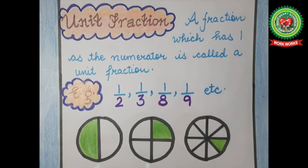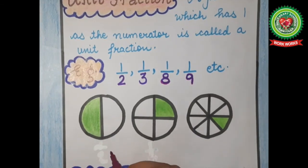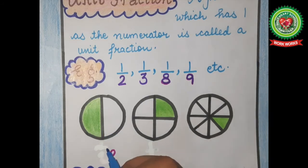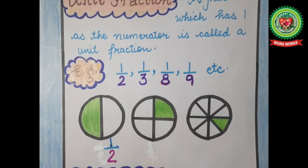Now students, tell me in this circle, how many total parts are there? Total parts are two — one and two. And out of these two parts, how many parts are shaded? One part. That means out of two, one part is shaded.